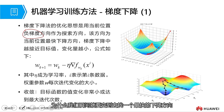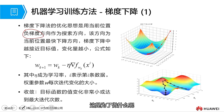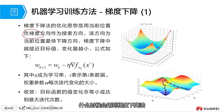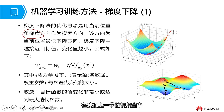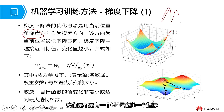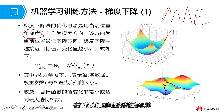So here, everyone might feel this progress is a bit fast — why do we have to instantly find the fastest descending direction? What is this for? We can briefly explain when the gradient descent method will be used. Let's recall from our last video: do we have an indicator like MAE to evaluate our regression task? Can everyone still remember this indicator?